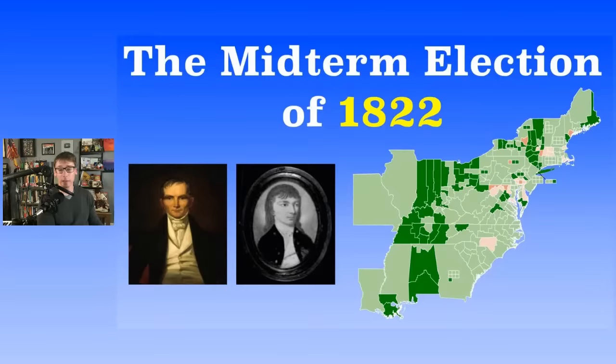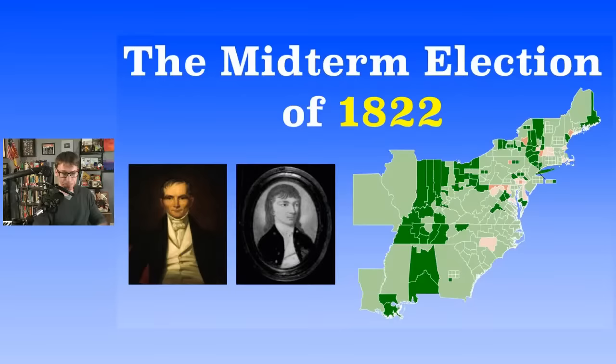Despite the fact that Andrew Jackson received the most electoral votes — the plurality — he still didn't get the majority. Long story short, John Quincy Adams won. He was viewed as an elitist, and then you had this rising movement all around Andrew Jackson, which shapes the next midterm election in 1826.